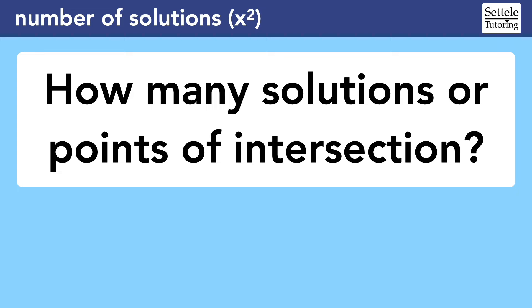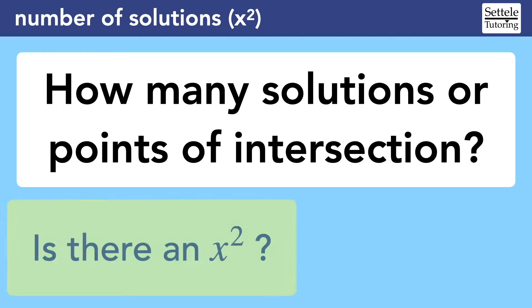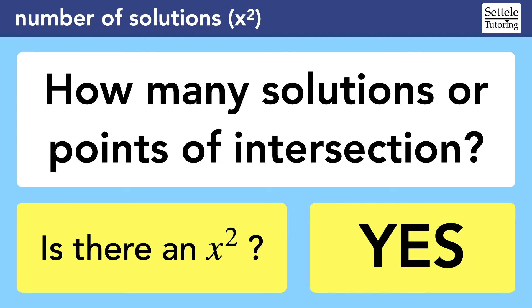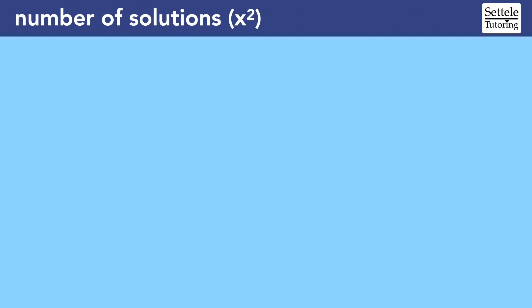The SAT consistently asks about the number of solutions for an equation or system of equations. The first thing you should figure out is whether there's an x-squared term somewhere in the question. This lesson covers what to do when there is an x-squared. If there is not an x-squared, then you're dealing with one or two linear equations, which behave differently and are covered in a separate lesson. If you do have an x-squared, then you're probably working with a quadratic equation in some way.